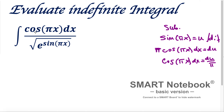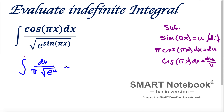Now instead of cosine(πx) dx, we substitute du over π. The denominator becomes the square root of e to the exponent u. We can factor 1 over π out front, giving us (1/π) times the integral of du.